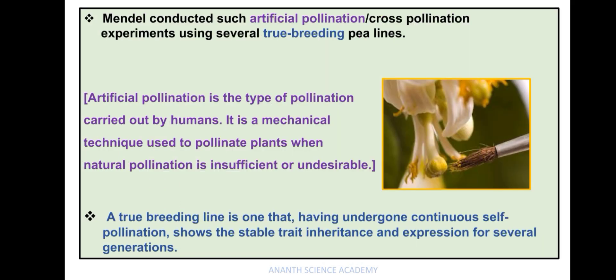Mendel conducted artificial pollination or cross-pollination experiments using several true breeding lines. Artificial pollination is a type of pollination carried out by humans — a mechanical technique used to pollinate plants when natural pollination is insufficient or undesirable. A true breeding or pure breeding line is one that, having undergone continuous self-pollination, shows stable trait inheritance and expression for several generations.